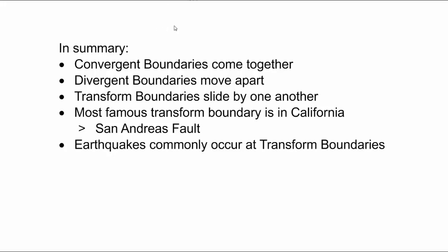In summary, convergent boundaries are where the plates are coming together. Divergent boundaries are where the plates are moving apart — they're dividing, they're separating. Transform boundaries — the plates are sliding side by side, moving next to one another, not towards and not away from each other. The most famous of these transform boundaries is in California, and that's where the San Andreas Fault is located. These transform boundaries are known for causing severe earthquakes, like the one that happened in the 1989 World Series.